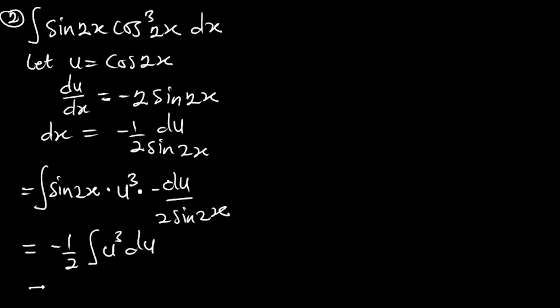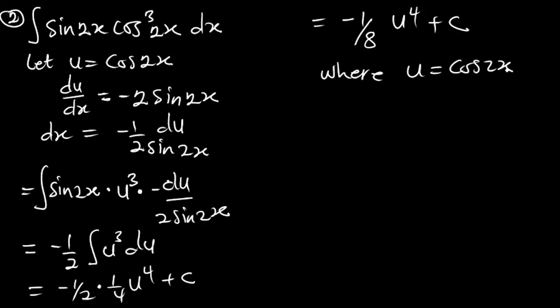So I can integrate now. And that is negative half multiplying 1 over 4 u to the fourth plus c. And with this, you are going to get negative 1 over 8 u to the fourth plus c, where my u is cos 2x. And this is going to give me my final answer: negative 1 over 8 cos to the fourth 2x plus c.